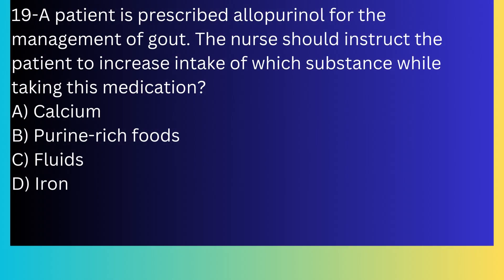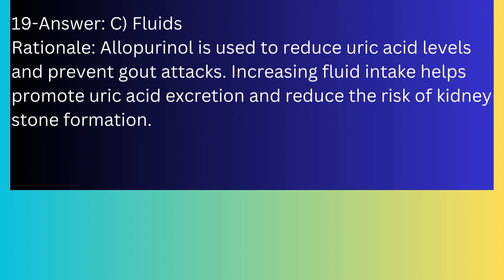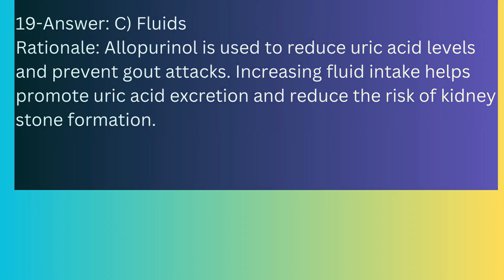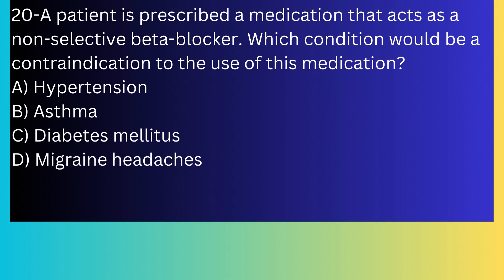Question number nineteen: A patient is prescribed allopurinol for the management of gout. The nurse should instruct the patient to increase intake of which substance while taking this medication? A) Calcium, B) Purine-rich foods, C) Fluids, D) Iron. The answer is C, fluids. Allopurinol is used to reduce uric acid levels and prevent gout attacks. Increasing fluid intake helps promote uric acid excretion and reduce the risk of kidney stone formation.